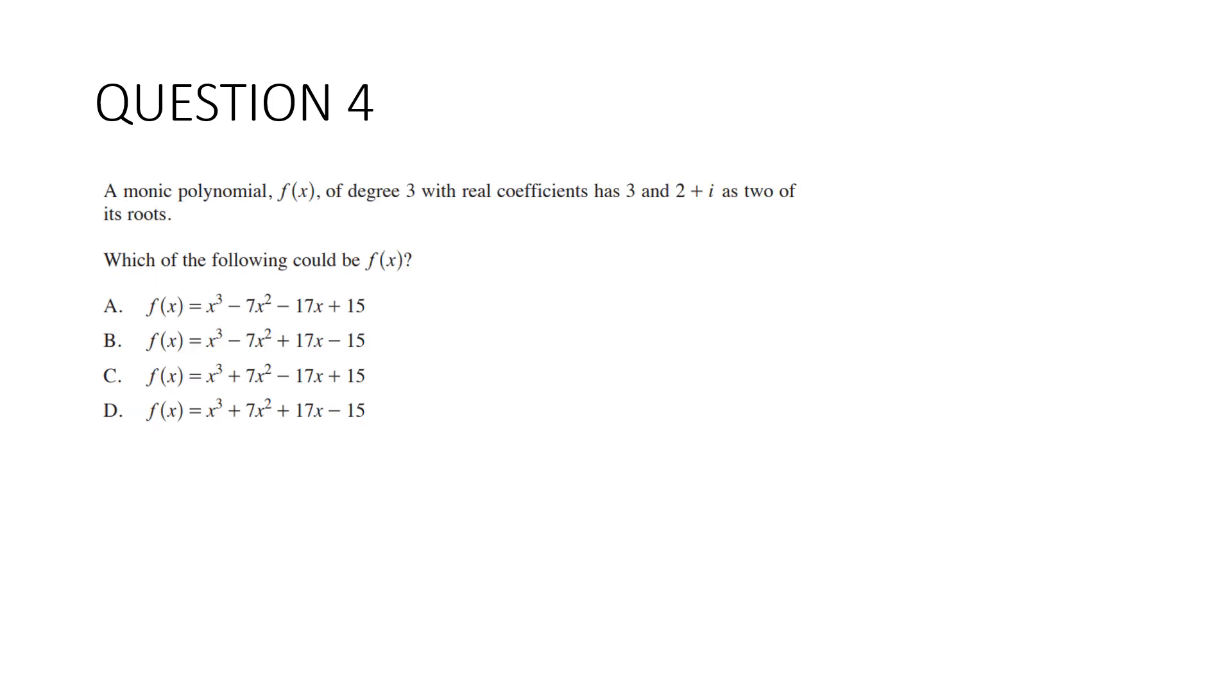Question 4. A monic polynomial f(x) of degree 3 with real coefficients has 3 and 2 plus i as two of its roots, which means the other root must be 2 minus i because it has real coefficients. It is easier to use the sum and product of the roots. The sum of the roots is negative b over a. In every case here a equals 1, so it equals negative b. The sum is 3 plus 2 plus i plus 2 minus i, which is 7. So b equals negative 7. So it's not C and not D.